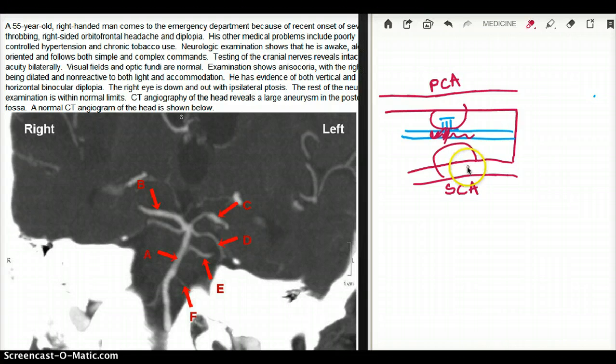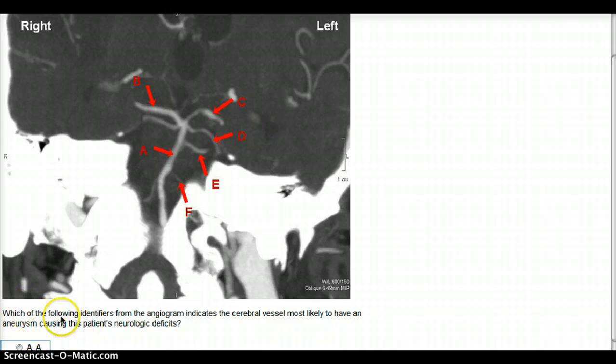The question says, which of the following identifiers from the angiogram indicates cerebral vessel most likely to have an aneurysm, causing this patient's neurological deficits? So the answer should be either posterior cerebral artery, or it should be superior cerebellar artery.